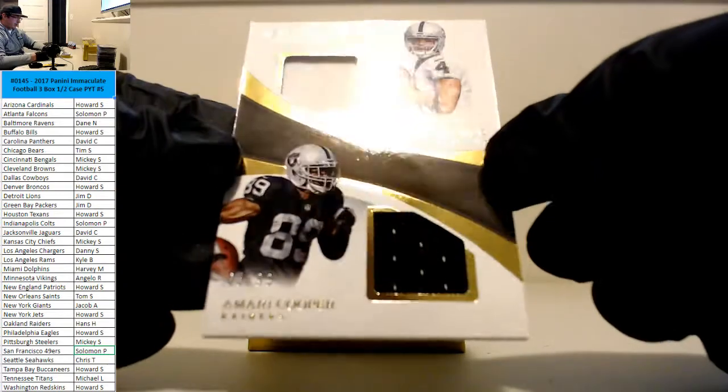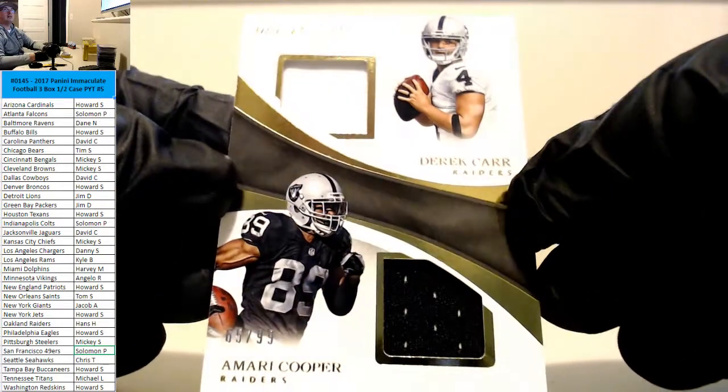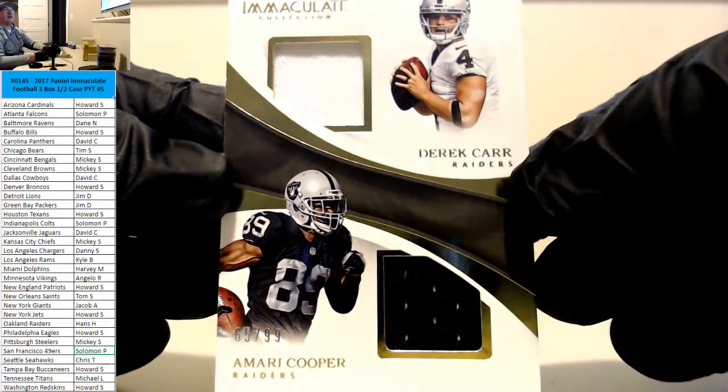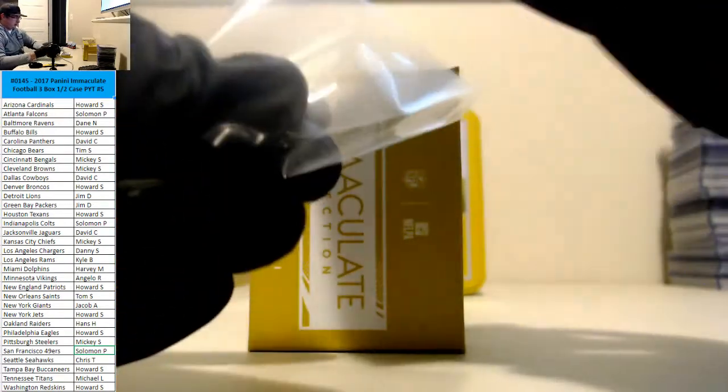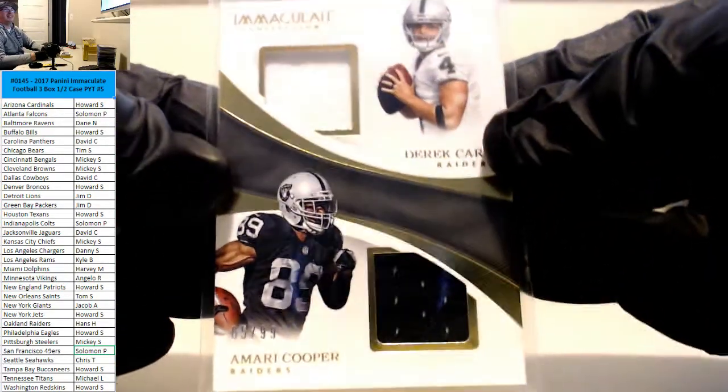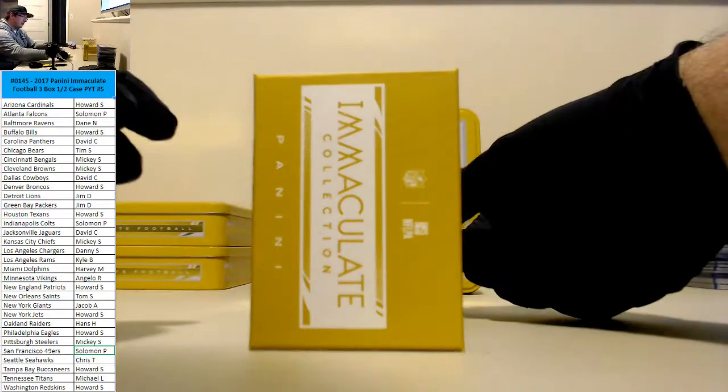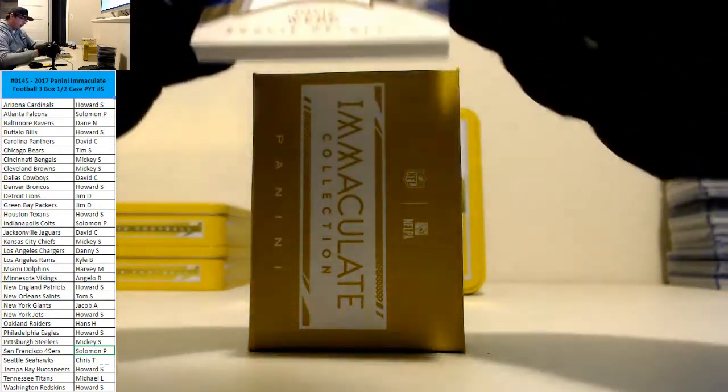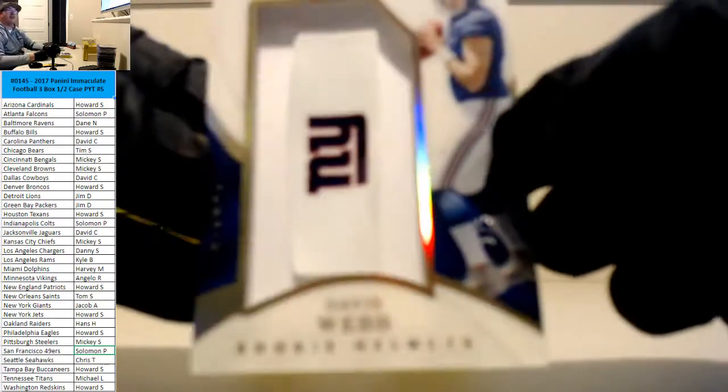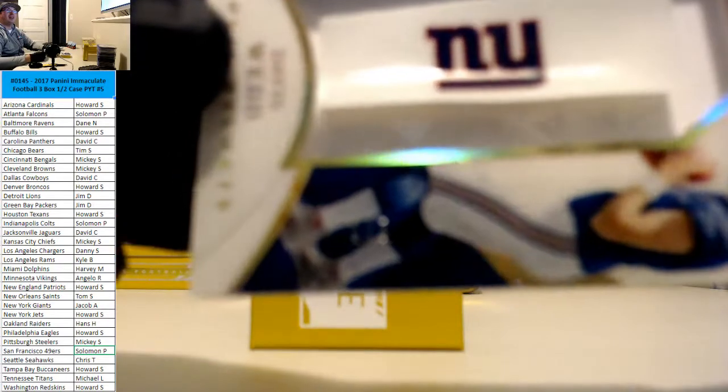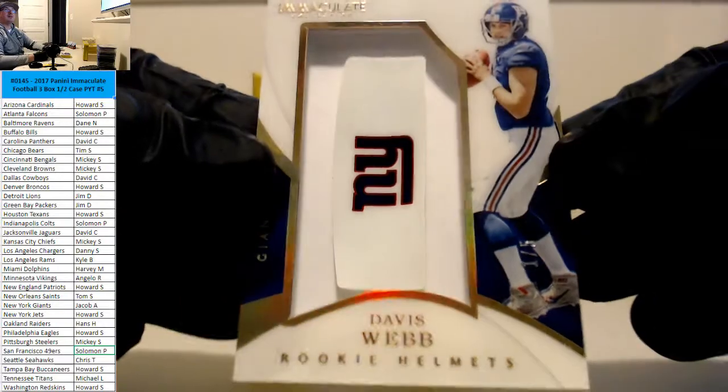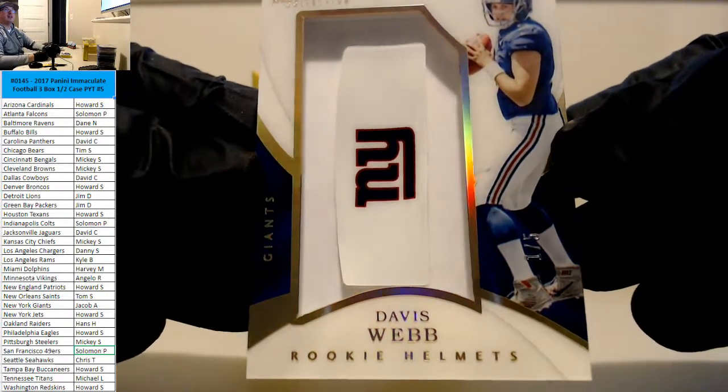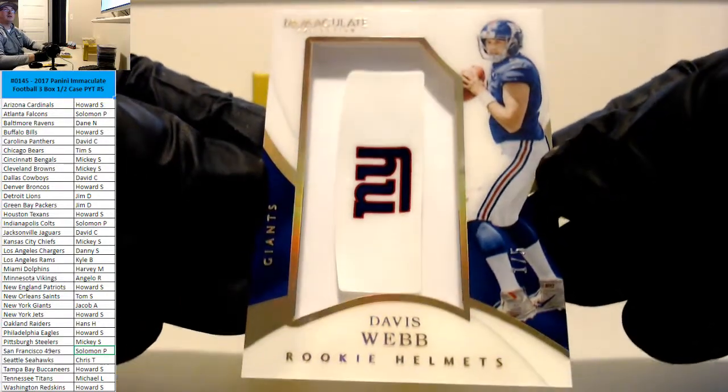For the Raiders, Amari Cooper and Derek Carr. Oh, my God. I guess it was a giant. Holy shit. It was a giant half. Oh, my goodness. Davis Webb, rookie helmets. One of five. What the hell is going on? Wow. Davis Webb, piece of a helmet. That is gorgeous. Sick.